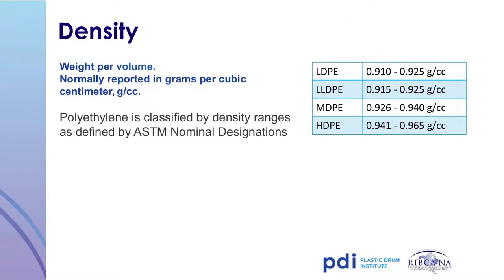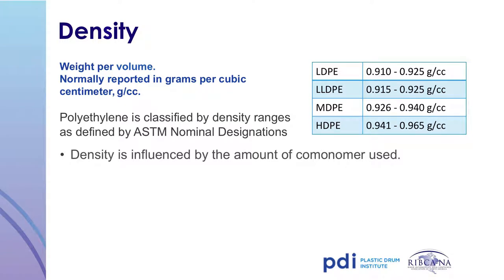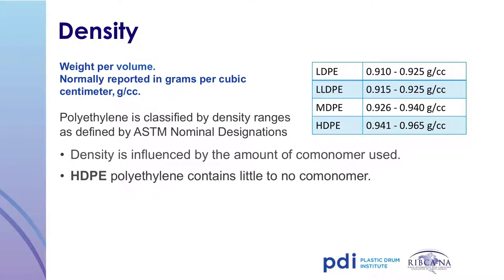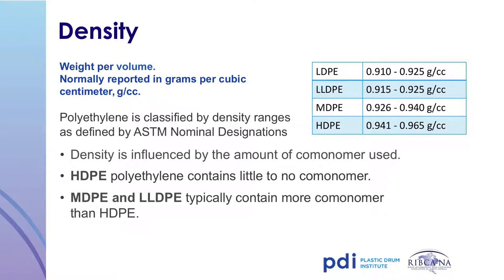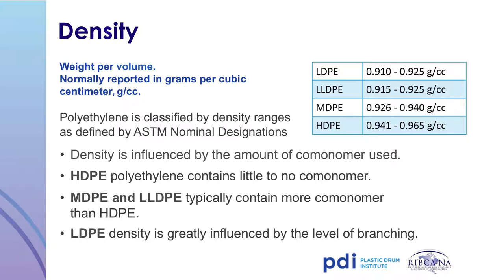Resins are sorted by type: low density, linear low density, medium density, and high density polyethylene. Density is expressed in grams per cubic centimeter. The amount of comonomer influences the different densities — the more comonomer added, typically the lower the density. High density polyethylene contains little or no comonomer. Medium density and linear low density contain more comonomer and are more flexible. Low density polyethylene has a very high degree of branching, similar to branches on a tree, reducing the polymer's density and making it more flexible.